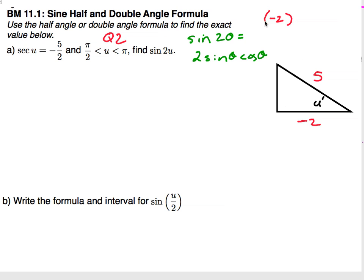So negative 2 squared plus b squared will equal 5 squared. It looks like b will equal the square root of 21.